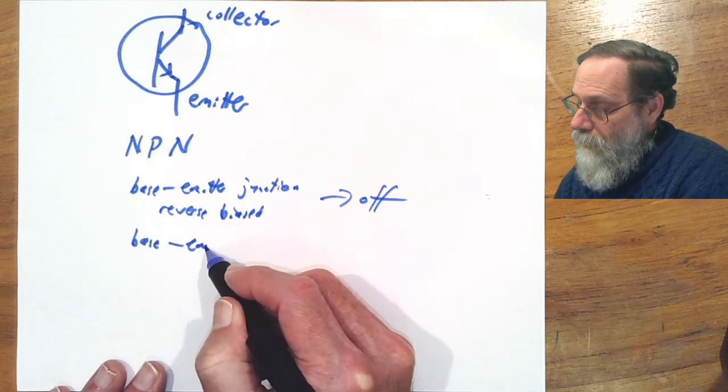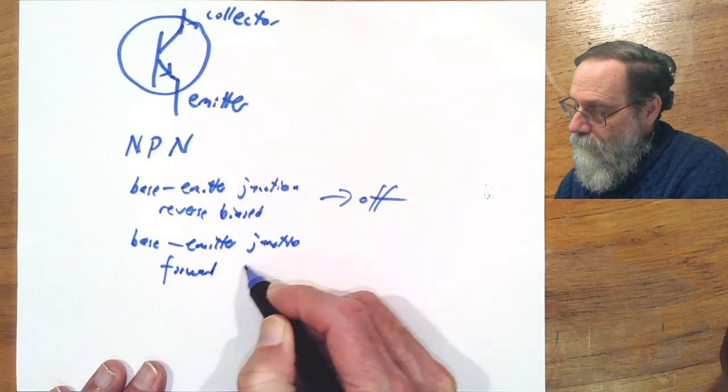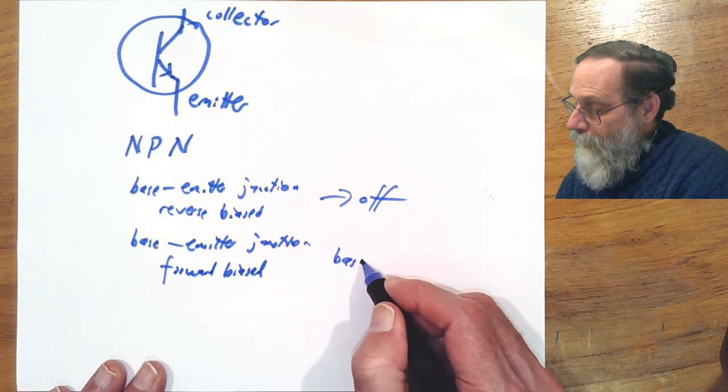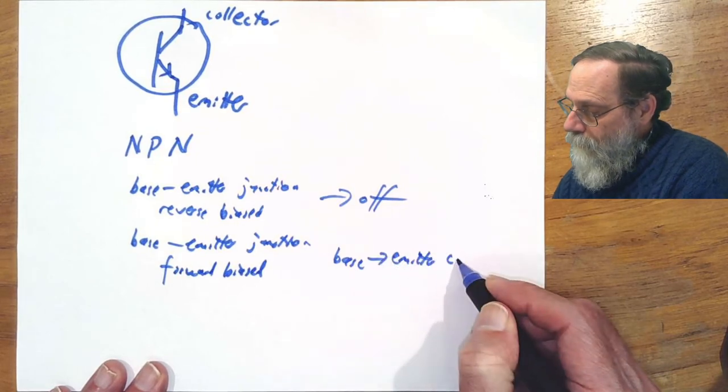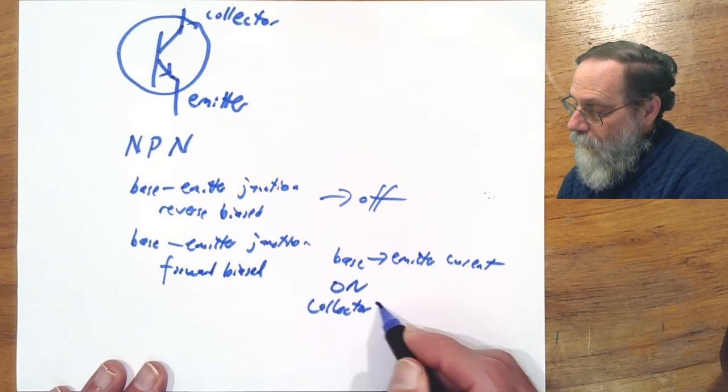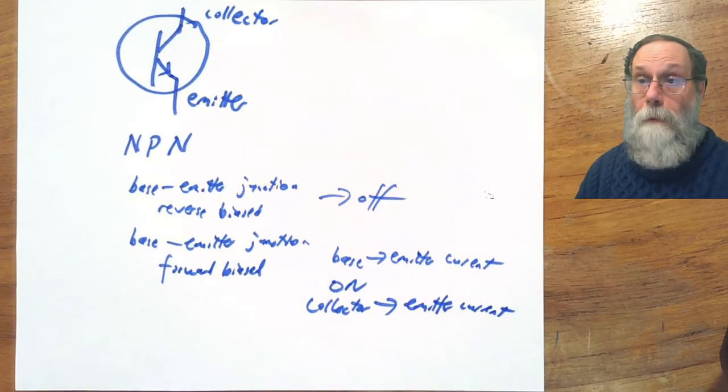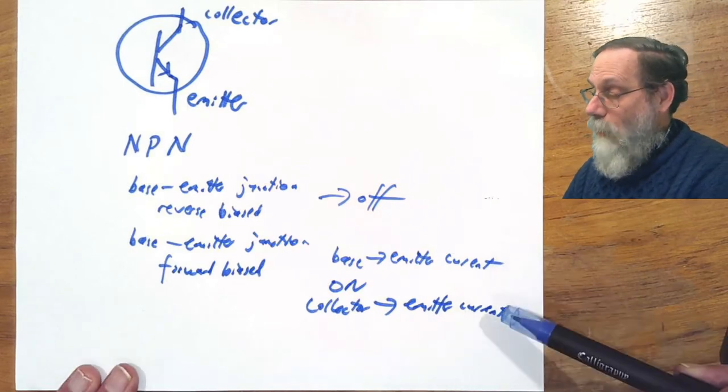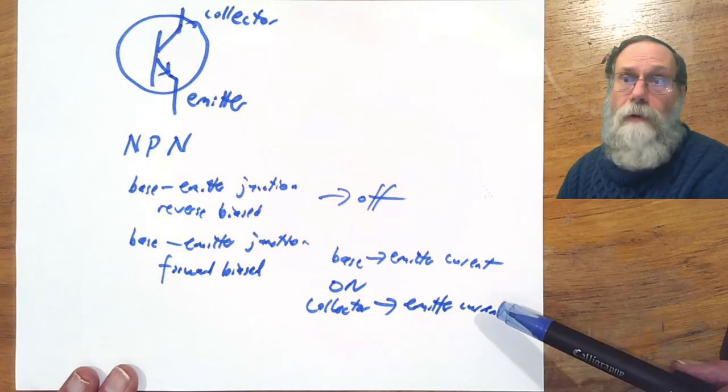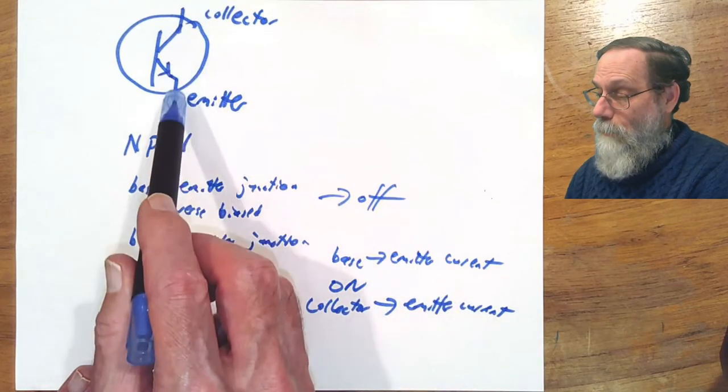When the base emitter junction is forward biased, and we get base to emitter current, then we will also get the transistor turning on, and we will get collector to emitter current. And the cool thing about bipolar transistors is that there is a large gain from the base to emitter current to the collector to emitter current, often around 100. So the transistor now is on, we will get a large current from the collector to the emitter.